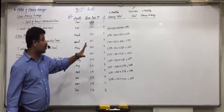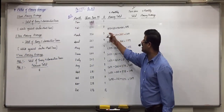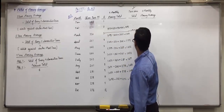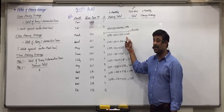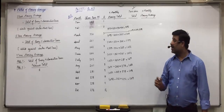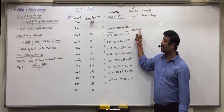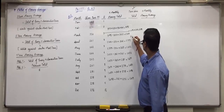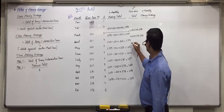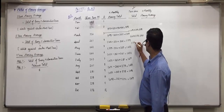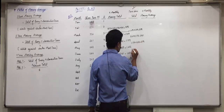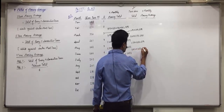Now, pairwise total means we do the total of every two consecutive moving totals and write it against the middlemost row. Against row 3: 1095 plus 1104 equals 2199. Then 1104 plus 1139 equals 2243. Then 1139 plus 1052 equals 2191. Then 1052 plus 1052 equals 2104.